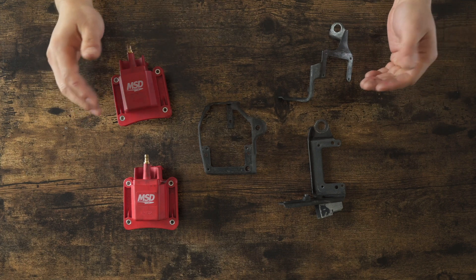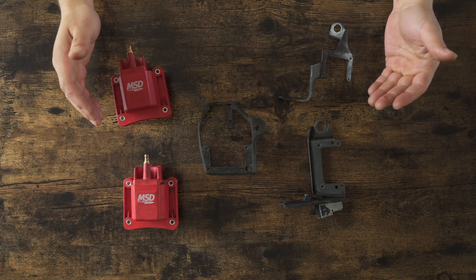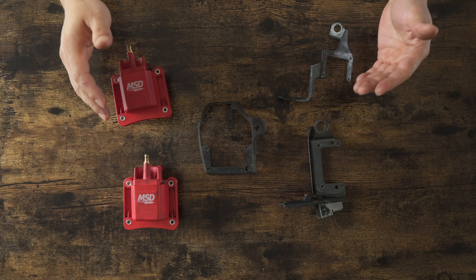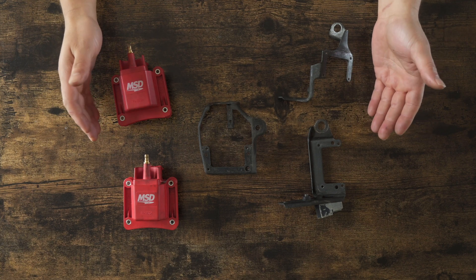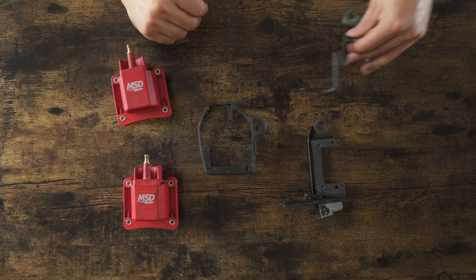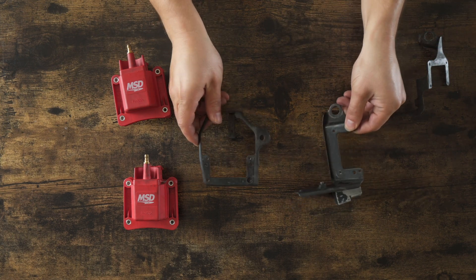But first, I want to distinguish first generation and second generation 1UZ brackets. Both of them are going to be non-VVTi, so we're talking from 1992 to 1997. So on the first generation engines, you have these two brackets.